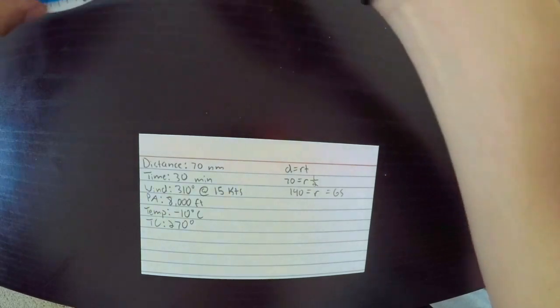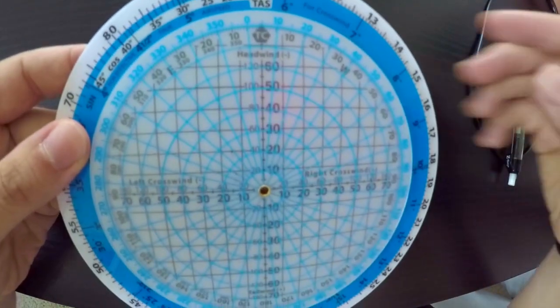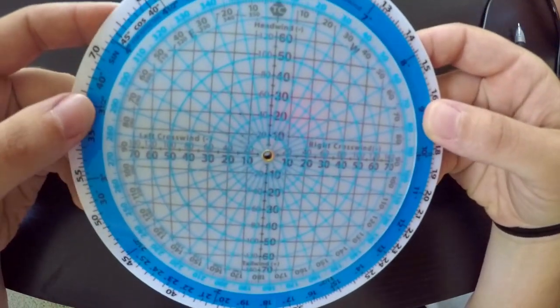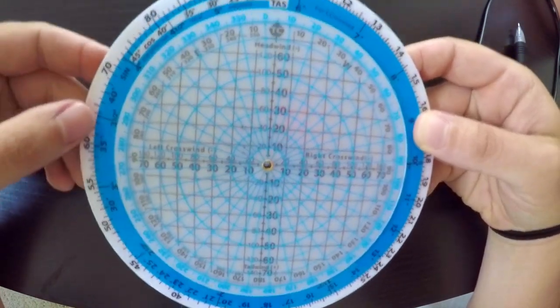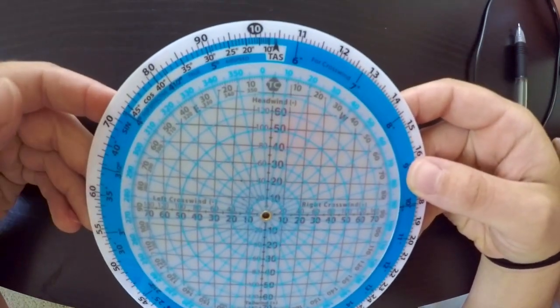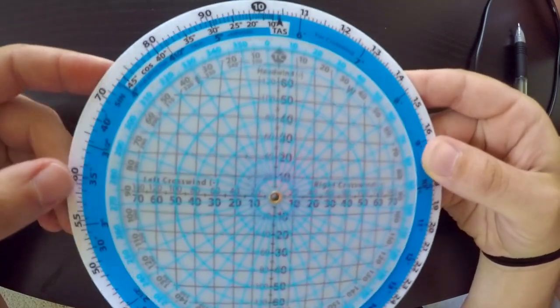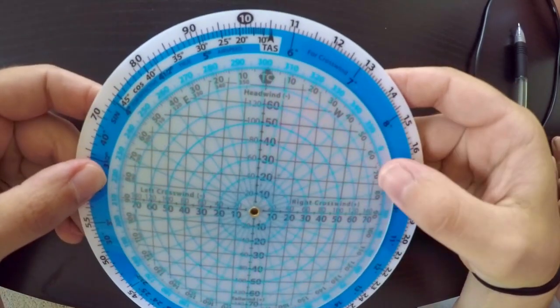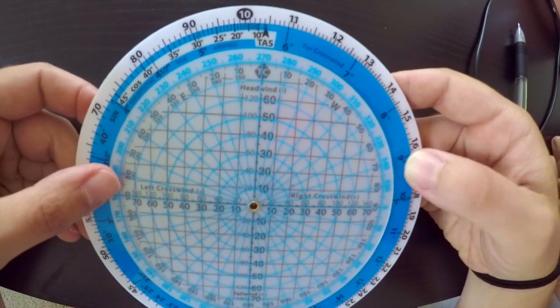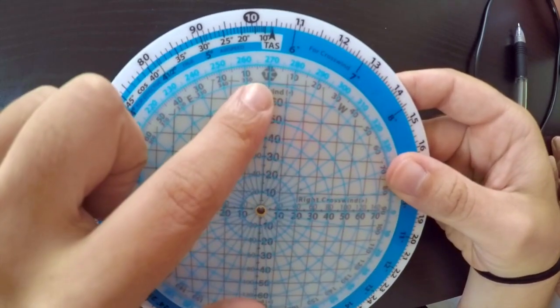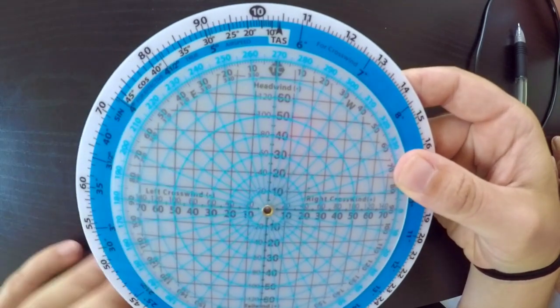So to do this, we need to get our flight computer back. So we don't worry about lining up the true airspeed arrow, because we don't know our true airspeed yet. So our true course was 270, so we're going to flip this around until 270 is lined up with the true course marker right here.